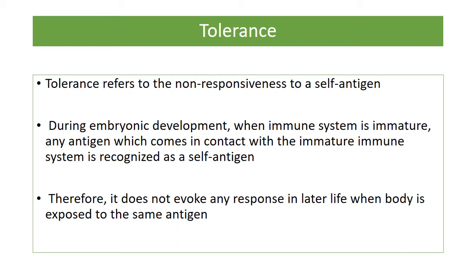Our immune system must know the difference between self and non-self antigen like bacteria and viruses. Otherwise, if a person becomes immune to his or her own self tissue, the process of acquired immunity would destroy the individual's own body cells. This tolerance mechanism is achieved during embryonic development when the immune system is immature and is exposed to our body cells. The system then recognizes all these tissues as self antigen. In later life, when the same antigens are exposed to this immune system, it does not evoke any immune response — this mechanism is known as tolerance.